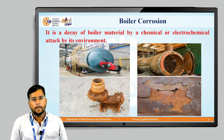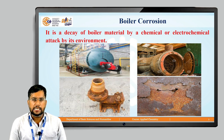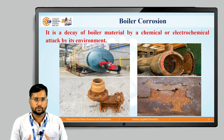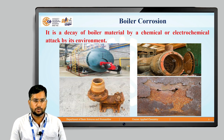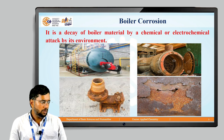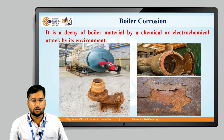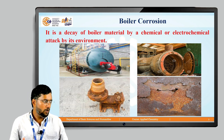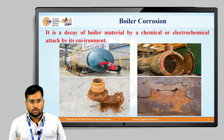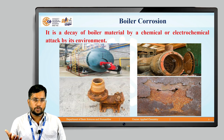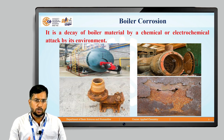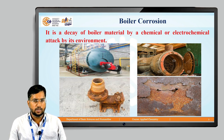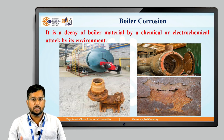Now, what is corrosion? Corrosion is the decay or deterioration of a metal from its surface when the metal comes in contact with its environment — it may be dry corrosion or wet corrosion. Due to corrosion, the metal loses its strength and the properties of the metallic material get affected. In the case of a boiler, we are using impure water — hard water — to produce steam, and if there are impurities in the boiler feed water, these impurities lead to boiler corrosion. The impurities react with the boiler material from inside and the boiler material starts to corrode — that is boiler corrosion.